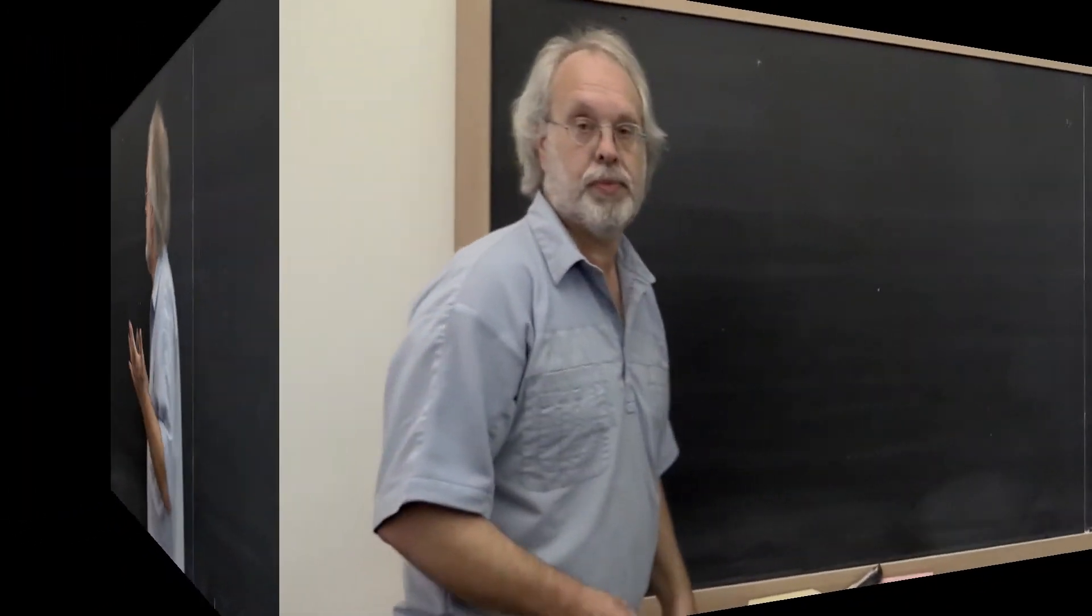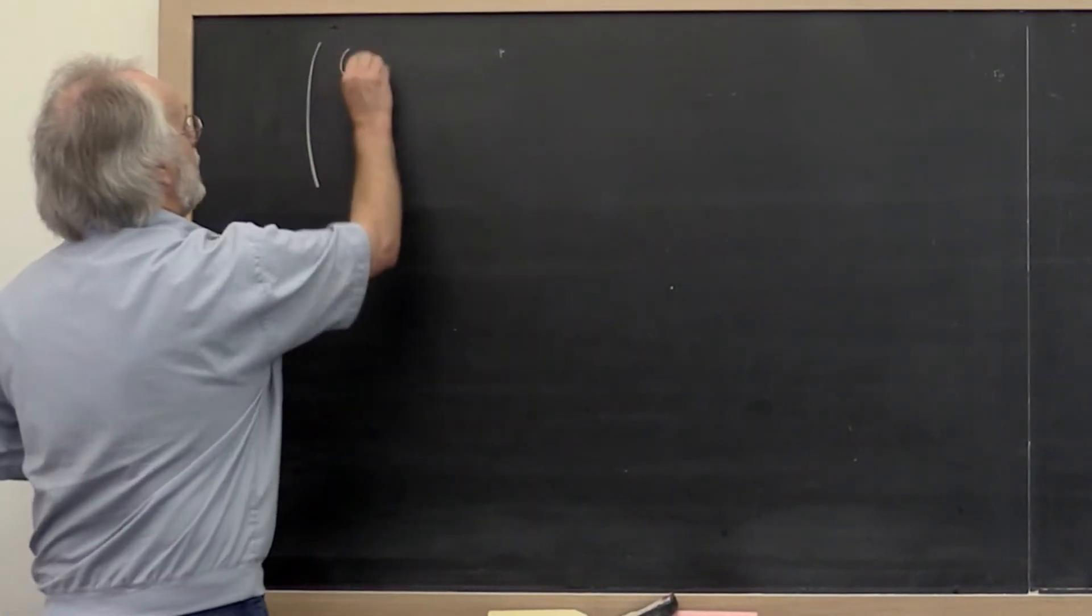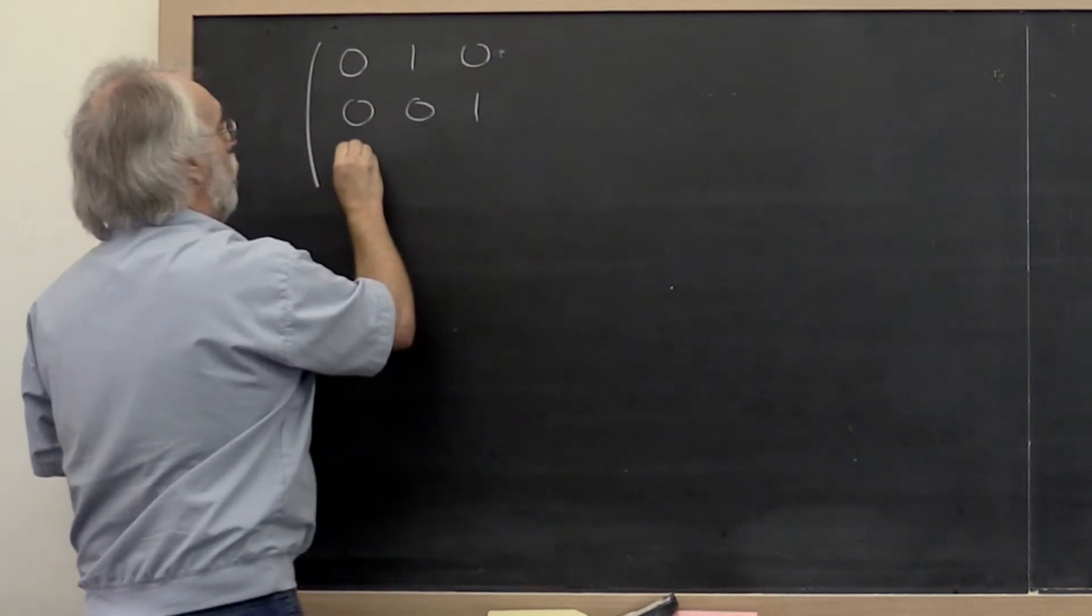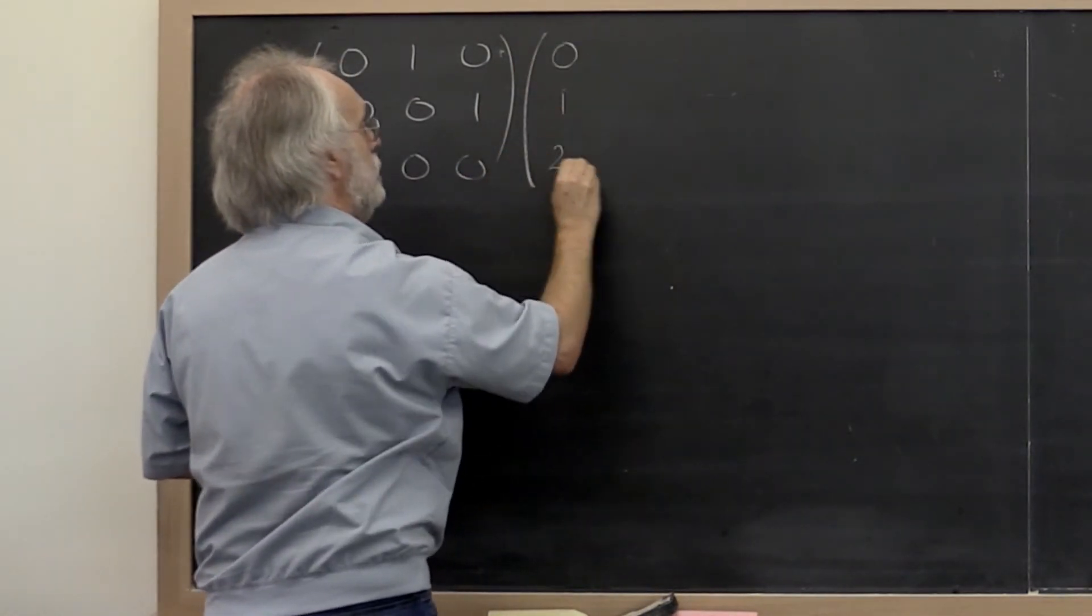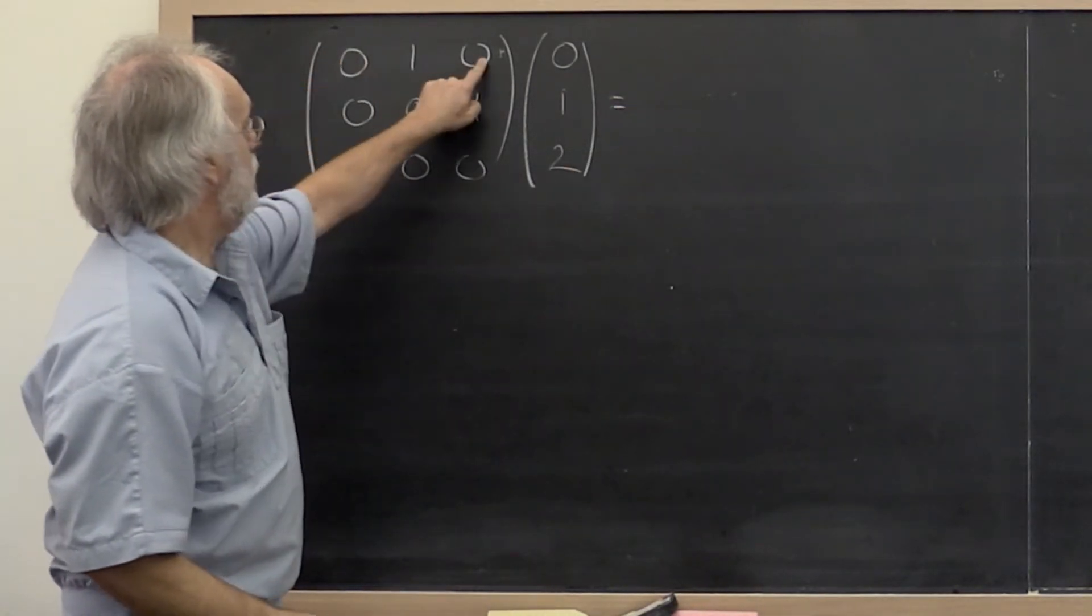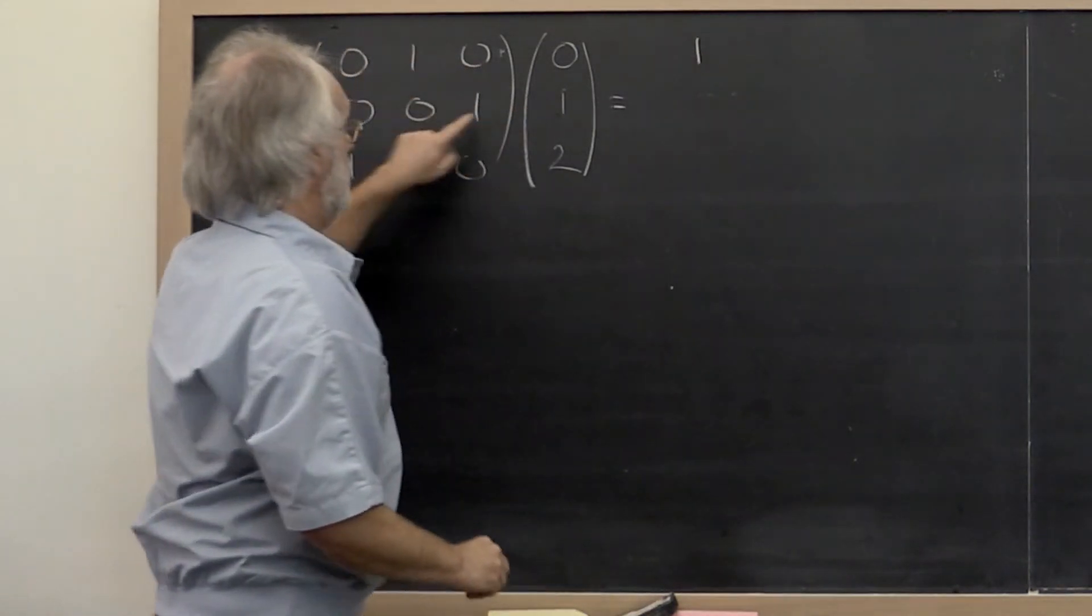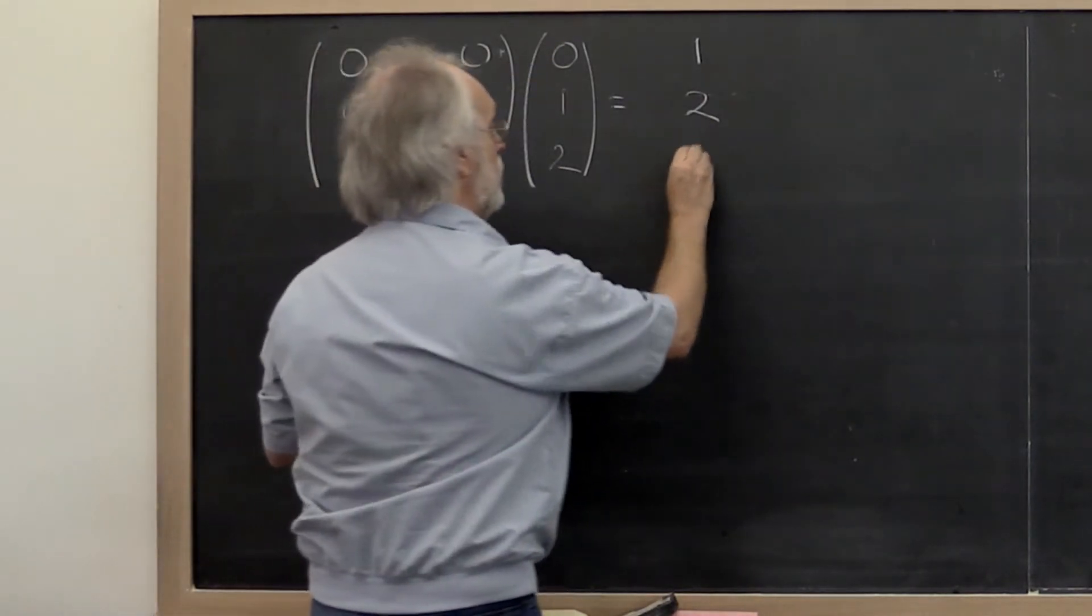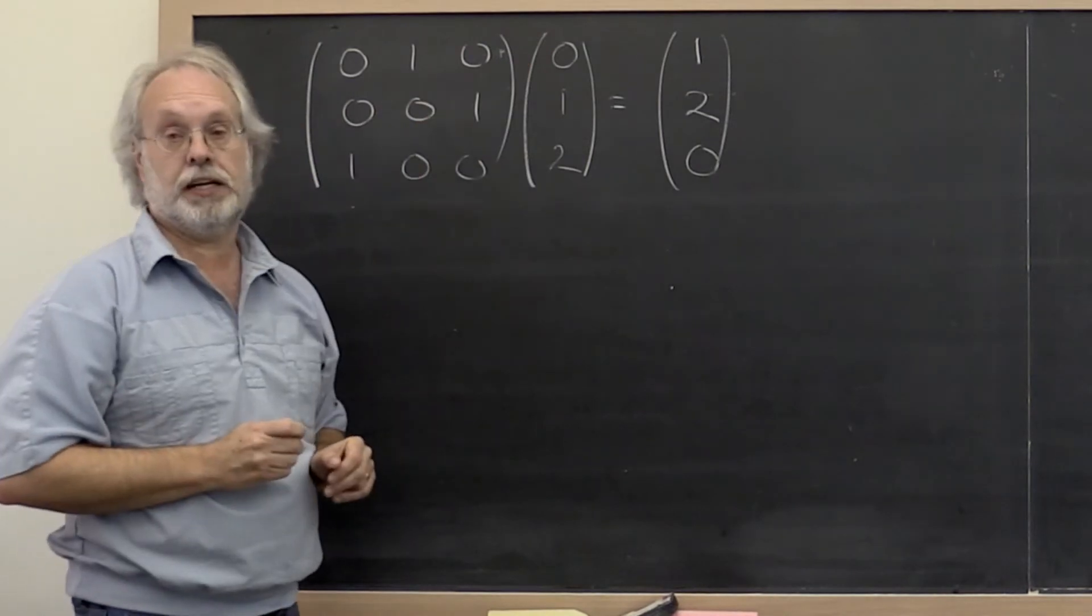Now what is a permutation matrix? Let's look at a quick example. Consider the matrix [0 1 0; 0 0 1; 1 0 0]. If we apply that to the vector [0; 1; 2], this picks out the second entry, this picks out the last entry, and this picks out the first entry. So what has happened is we've shuffled the entries in this vector around.